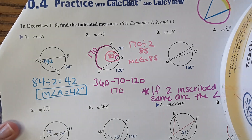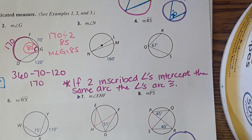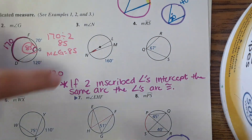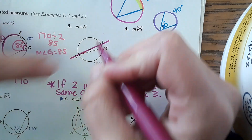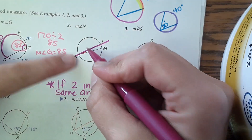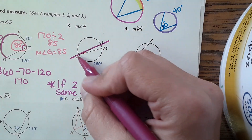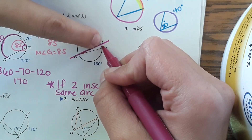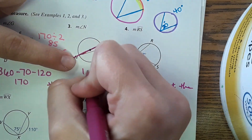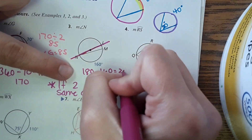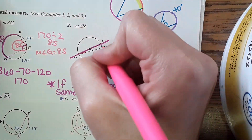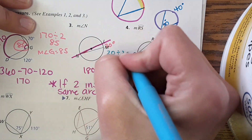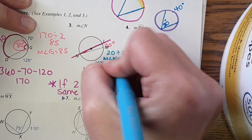Number three: find the measure of angle N. This time a diameter is shown across the circle — you know it's a diameter because it passes through the center. On this side, those two arcs add to 180°. So 180 minus 160 gives us 20°, and then 20 divided by 2 gives us 10°. The measure of angle N is 10 degrees.